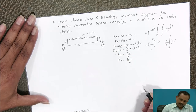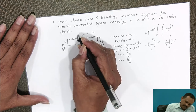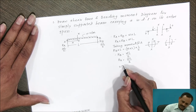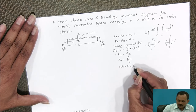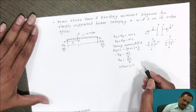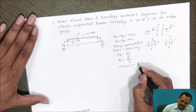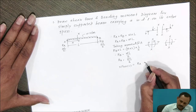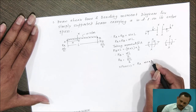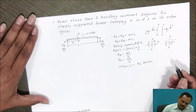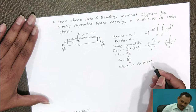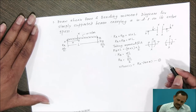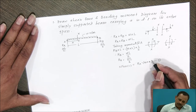Consider section XX at a distance X from the left end of the beam and calculate the shear force at section XX to its left side. The forces and reactions acting to the left side of the section are: reaction Ra acting vertically upward, considered positive; and a UDL at rate W spread over distance X, giving total load W into X acting as a point load downward to the left, considered negative. From equation 1, shear force varies according to a straight line law.